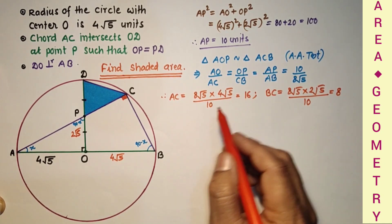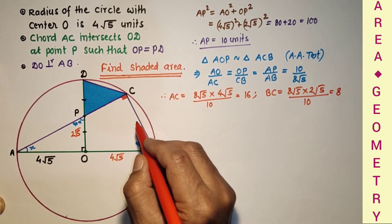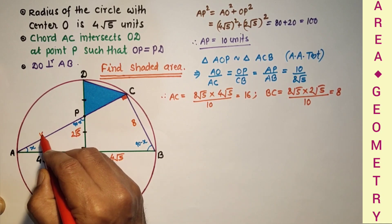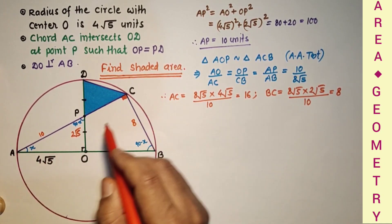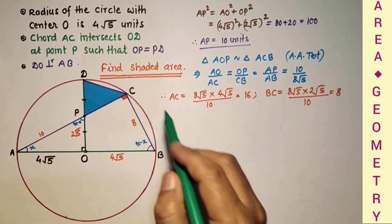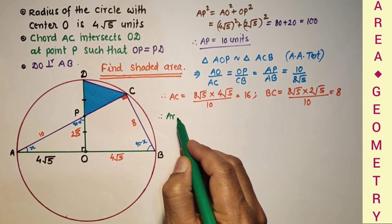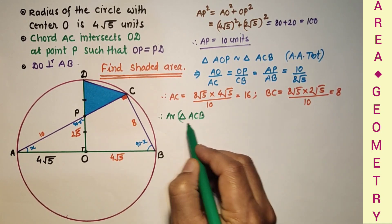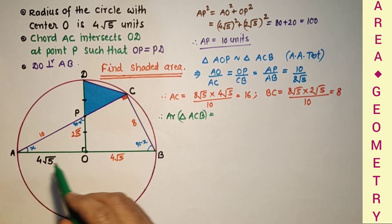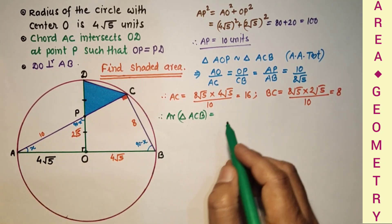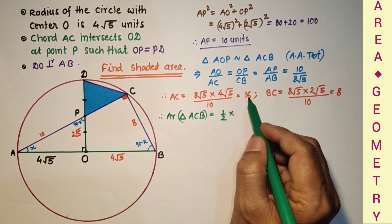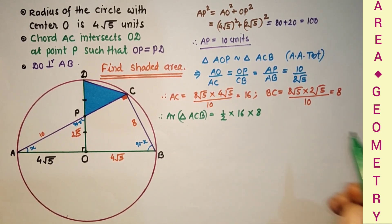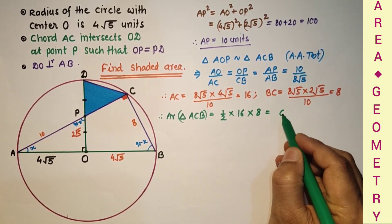So AC is 16 and BC is 8. And only AP is 10 units, and this whole thing is 16. So therefore area of triangle ACB is equal to half into product of legs, half into AC into CB. And AC is we found 16, and CB is 8. So that is equal to 64 square units.